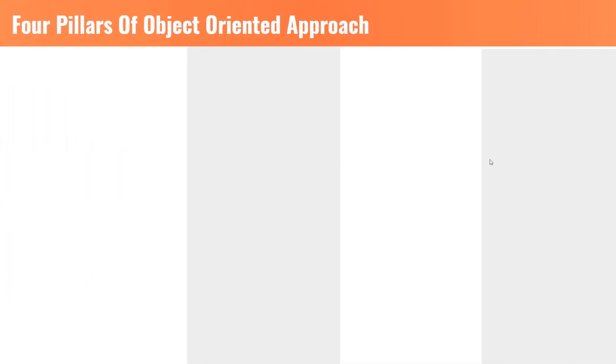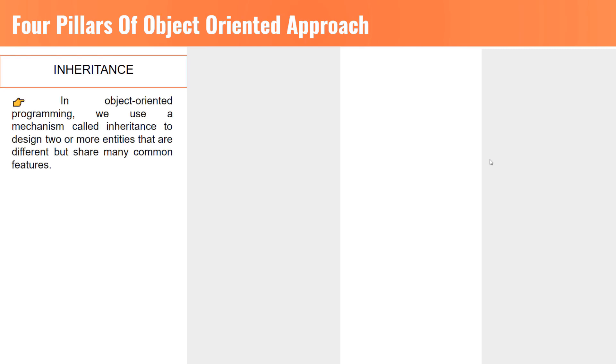There are four main pillars of object-oriented approach that you must understand. The first pillar is inheritance. Now, what is inheritance? Inheritance, in object-oriented programming, we use a mechanism called inheritance to design two or more entities that are different but share many common features. For example, the game you are creating might have different types of car. Let's say, pickup and truck.